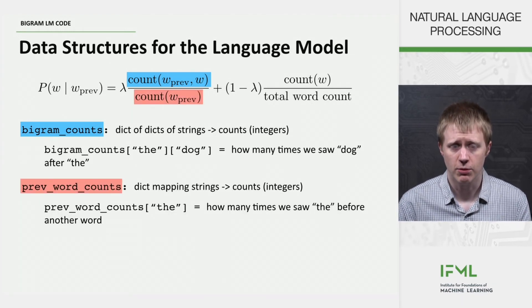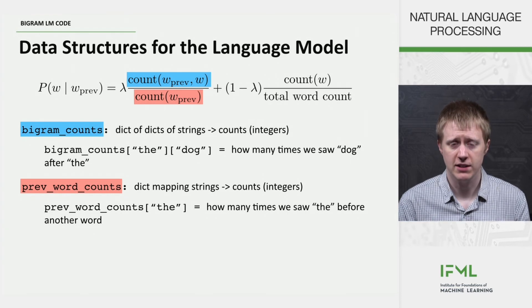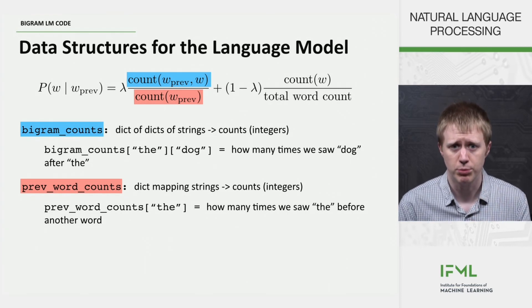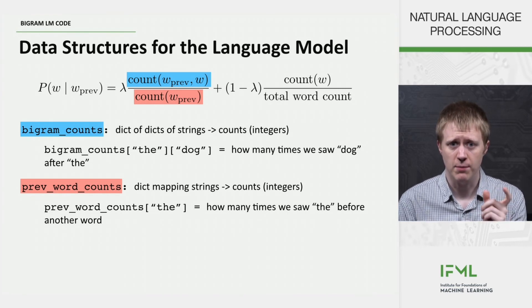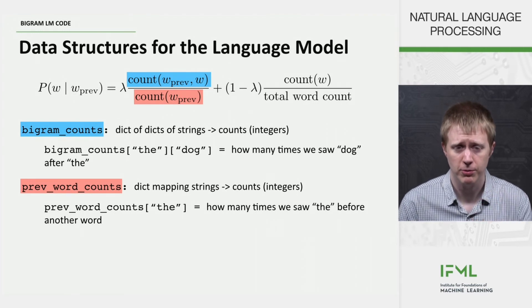So then we need the denominator here, which is stored as a dict from string to integer in prev_word_counts. And that's just how many times we saw the word the before another word.